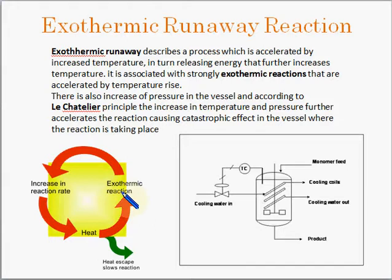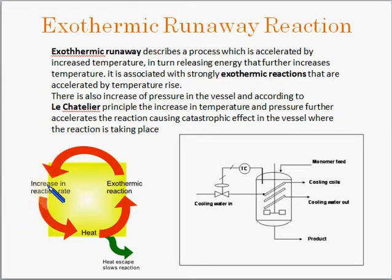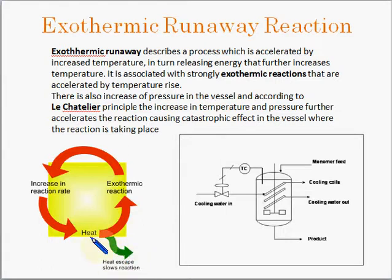As we can see the cycle: the cycle starts with the exothermic reaction, which gives out an increase in temperature and increase in reaction rate, which gives out heat and in turn causes the exothermic reaction to continue. Provided if there is no escape of heat, but if there is escape of heat, then the reaction remains under control.